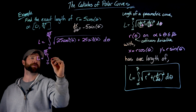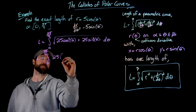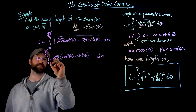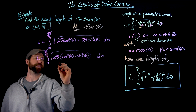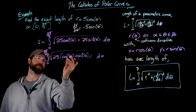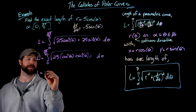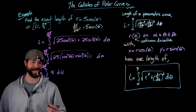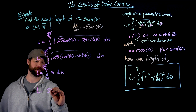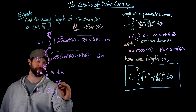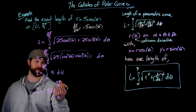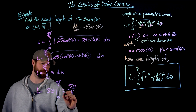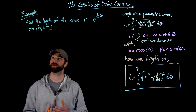This simplifies nicely. Factoring 25 out from inside the square root and applying the Pythagorean identity cos²θ + sin²θ = 1, we get sqrt(25) = 5. So the integral reduces to the integral from 0 to 3π/4 of 5 dθ, which is just 5θ evaluated from 0 to 3π/4. This gives 5·(3π/4) = 15π/4.